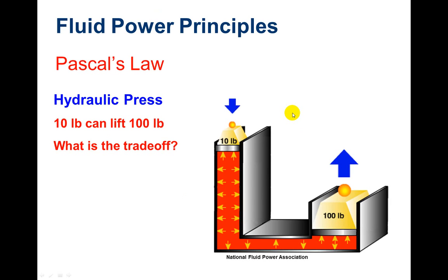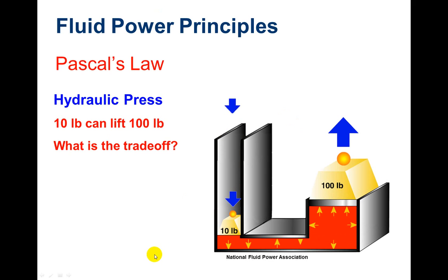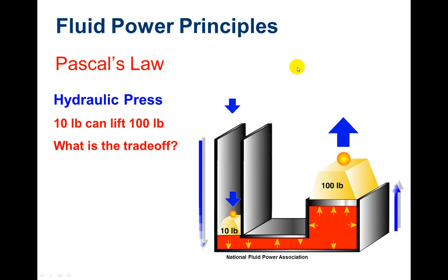This hydraulic press — 10 pounds can lift 100 pounds. Notice that pressure equals force divided by area. So if I can raise 100 pounds using 10 pounds, it's because the area is smaller here. Then here I've got the 100 pounds but my area is greater. But what is the trade-off? It would be distance — you have to go down a farther distance because the area is smaller, so the liquid has to go somewhere.